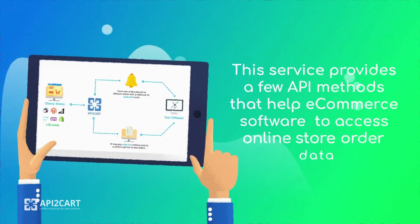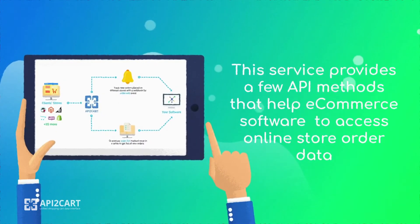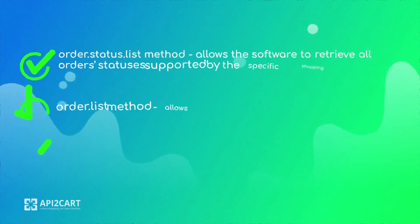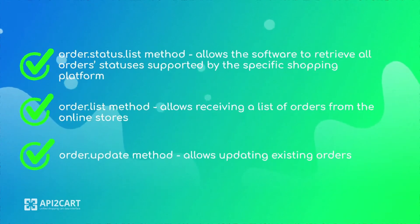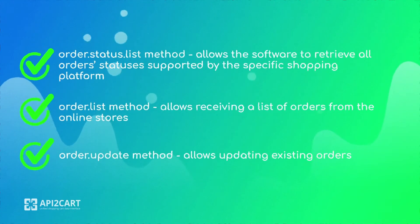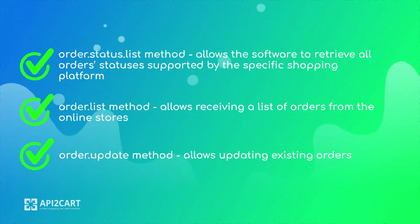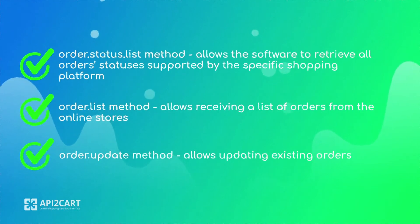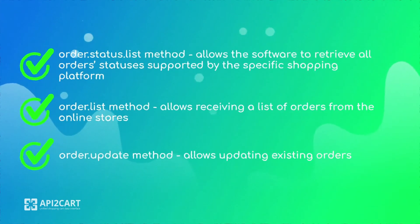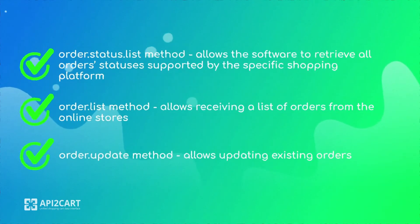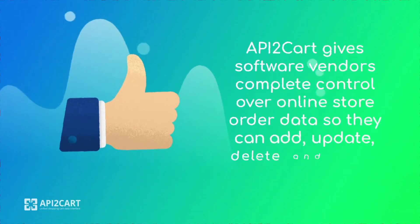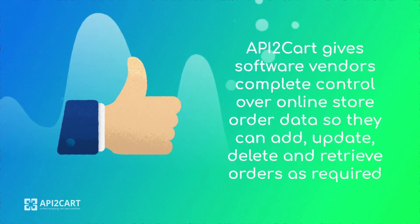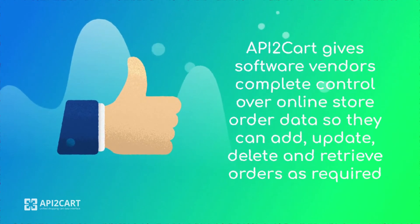This service provides a few API methods that help e-commerce software access online store order data. The Order Status List method allows the software to retrieve all order statuses supported by a specific shopping platform. The Order List method allows receiving a list of orders from online stores. The Order Update method allows updating existing orders. API2Cart gives software vendors complete control over online store order data so they can add, update, delete, and retrieve orders as required.